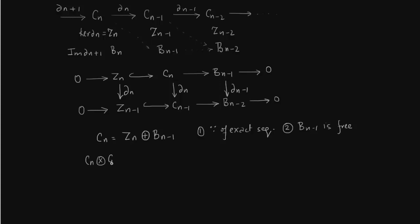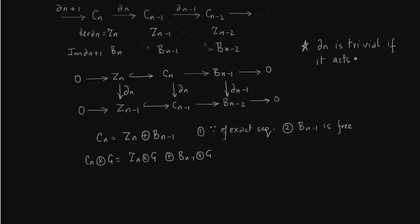Since B_{n-1} is free, C_n splits. This is because it is part of an exact sequence, but exactness alone is not enough to ensure splitting — it splits precisely because B_{n-1} is free. We then tensor each complex, and in the resulting chain complex the action of delta_n is trivial when taking Z_n to Z_{n-1}, precisely because Z_n is the kernel of delta_n, so delta_n acting on its kernel gives 0. Delta_{n-1} is also trivial because the boundary of a boundary is always 0.